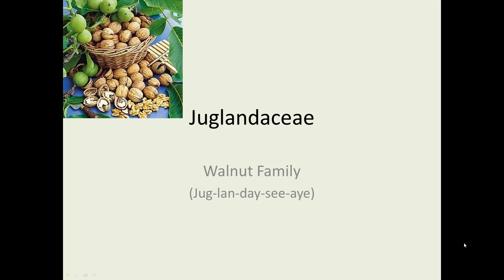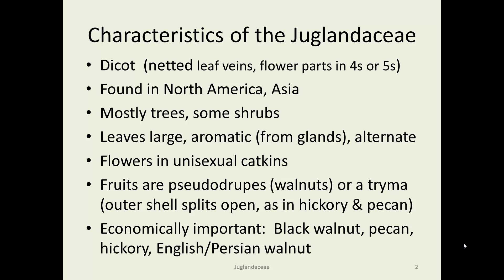The Juglandaceae, or walnut family, are found in North America and Asia. They are generally trees with large aromatic leaves, generally pinnate growth form and alternate. The flowers are unisexual in catkins. The fruits are pseudodrupes, as in walnuts, or called a trima in hickory and pecan — a trima being a nut-like fruit whose shell splits open when mature.